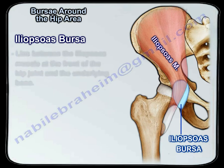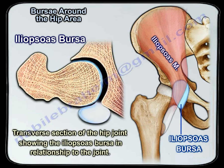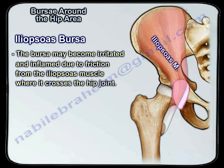Here is a transverse section of the hip joint showing the iliopsoas bursa in relationship to the joint. The bursa may become irritated and inflamed due to friction from the iliopsoas muscle where it crosses the hip joint.